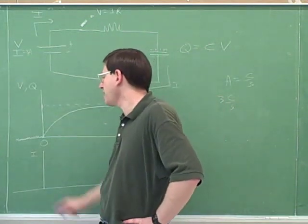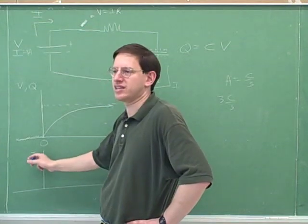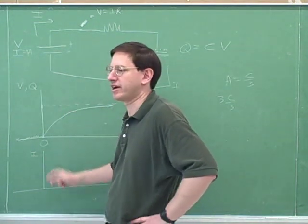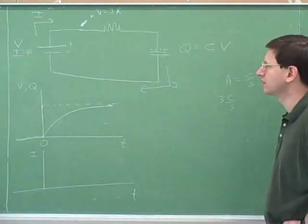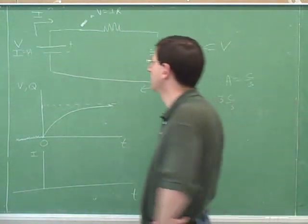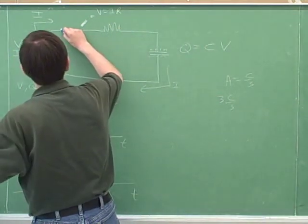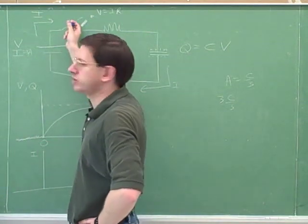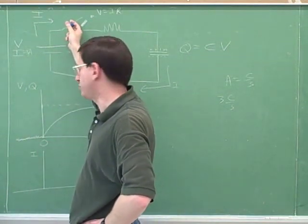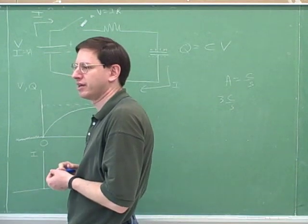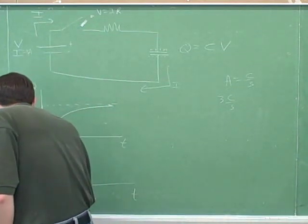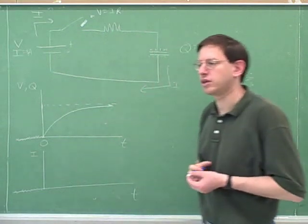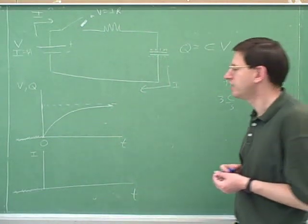We don't need to say whose current this is because everybody has the same current — that simplifies our graph. Before time zero, the switch was open, so the current was zero. There can't be current without a closed loop.